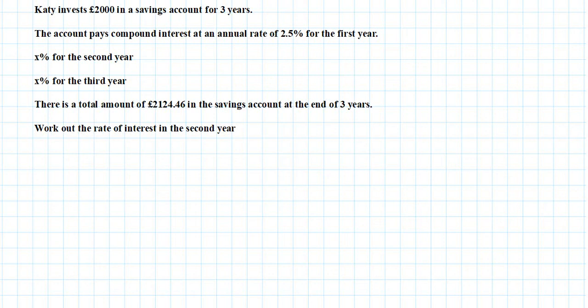Assalamu alaikum everyone. Today's video is on a compound interest question with a missing rate. So let's get started. Katie invests £2000 in a savings account for three years. The account pays compound interest at an annual rate of 2.5% for the first year.